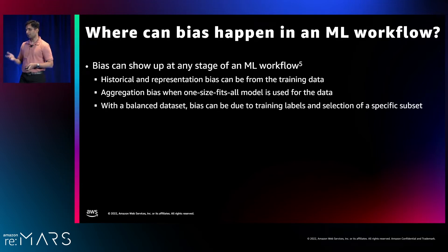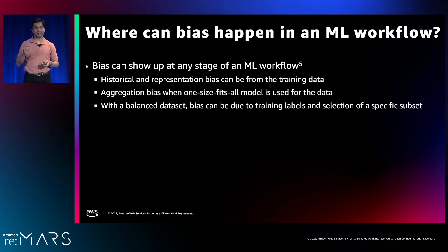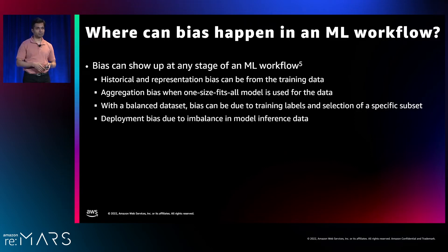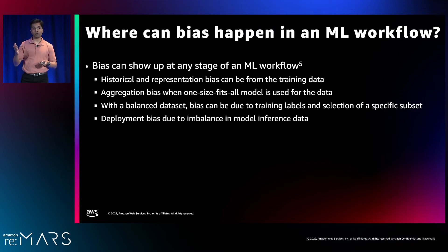Does having a balanced dataset mean the model is perfect? No — even with a balanced dataset, labeling can make a difference, and the selection of subsets can create an imbalance in training. Finally, there is deployment bias: with self-learning models deployed to production, concept drift can occur because incoming inference data is very different from what the model was trained on. That's another form of bias incorporated in model deployment.